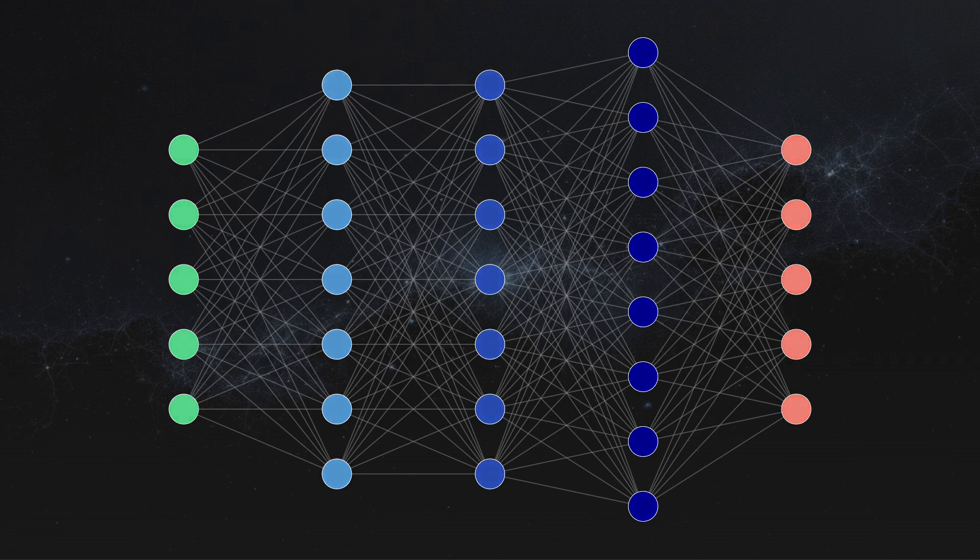A simple neural network consists of an input layer that receives data, such as numbers, images or text. Then we have hidden layers that perform calculations, extracting patterns from the input data. Finally, we have an output layer that produces final predictions or classifications, usually as probabilities.